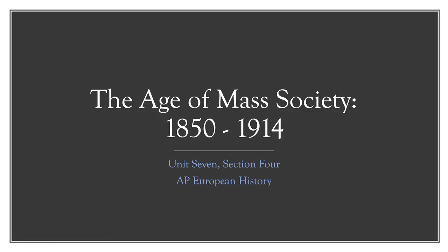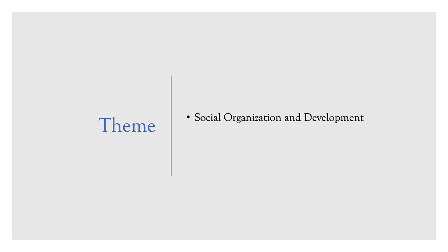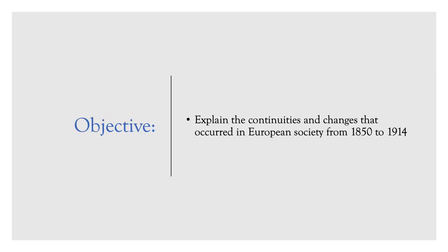Hi there, AP Euro students, and welcome to today's lecture: Unit 7, Section 4, The Age of Mass Society. The theme for today's lecture is social organization and development, and our objective — which is also your write-up — is to explain the continuities and changes that occurred in European society from 1850 to 1914.